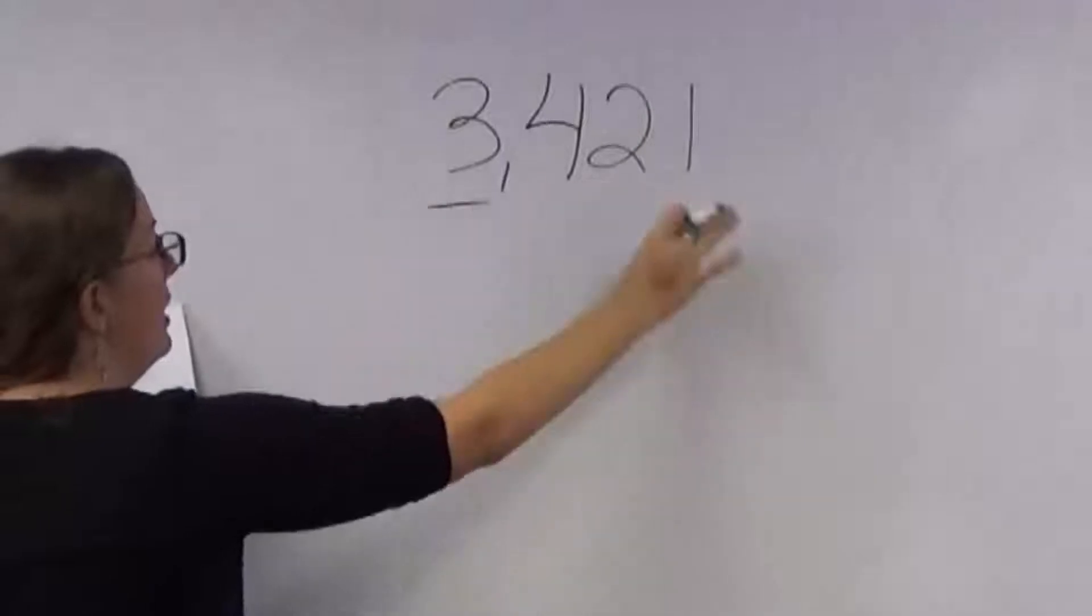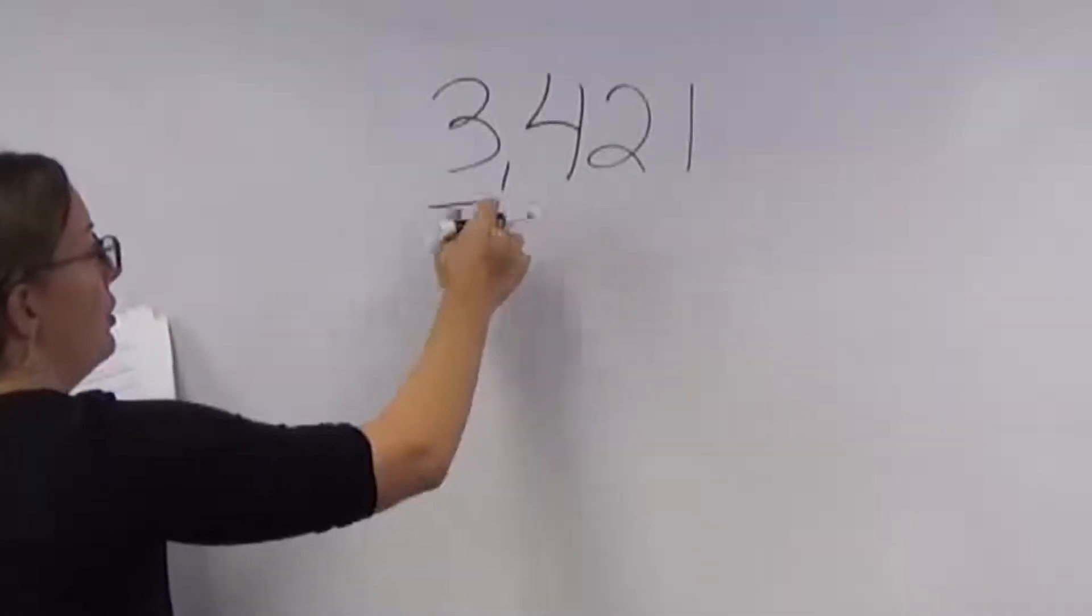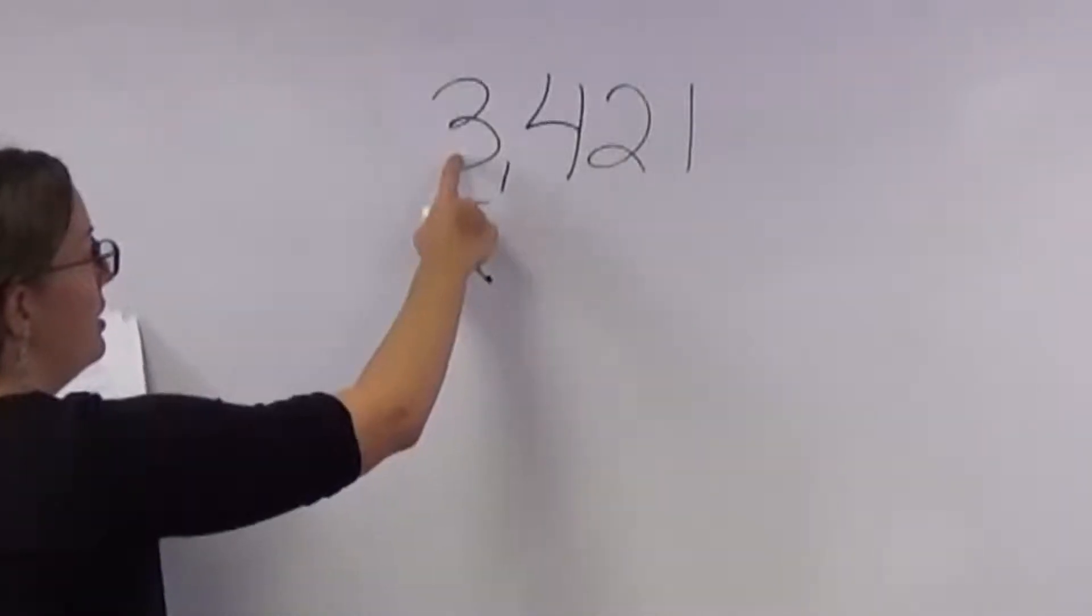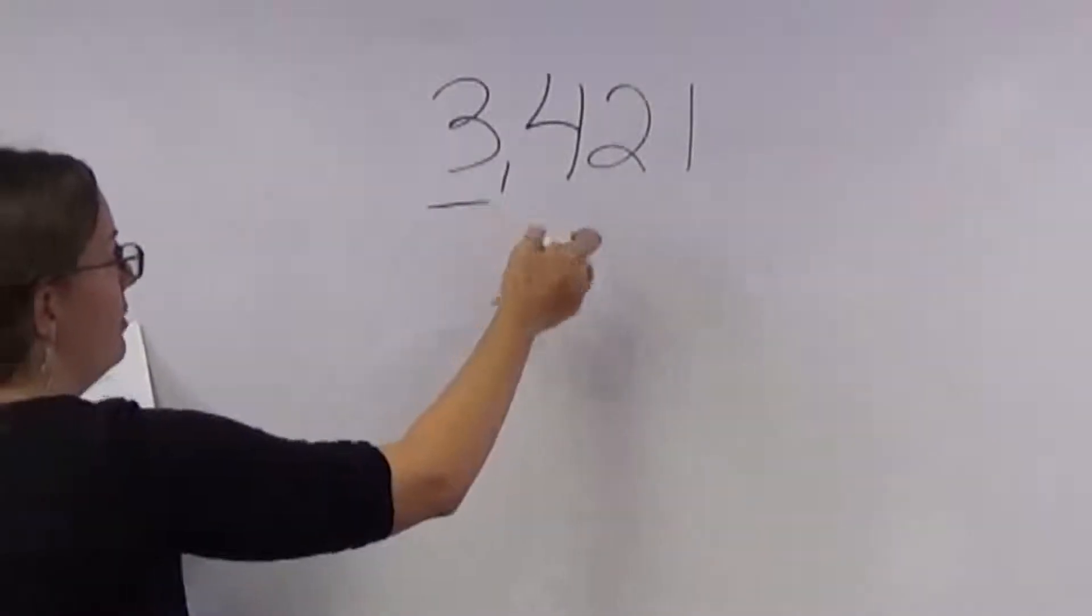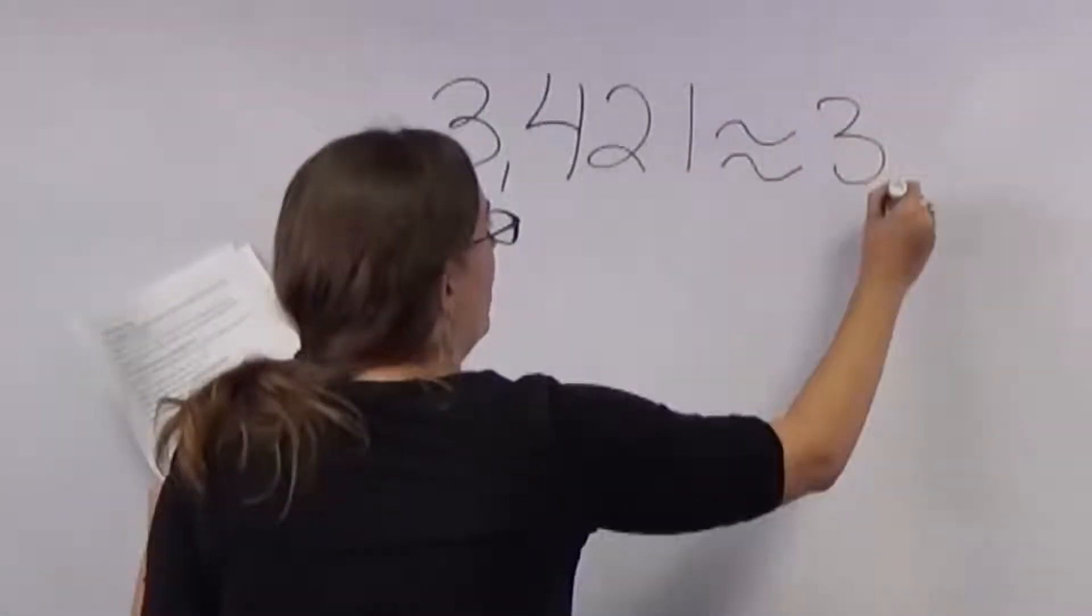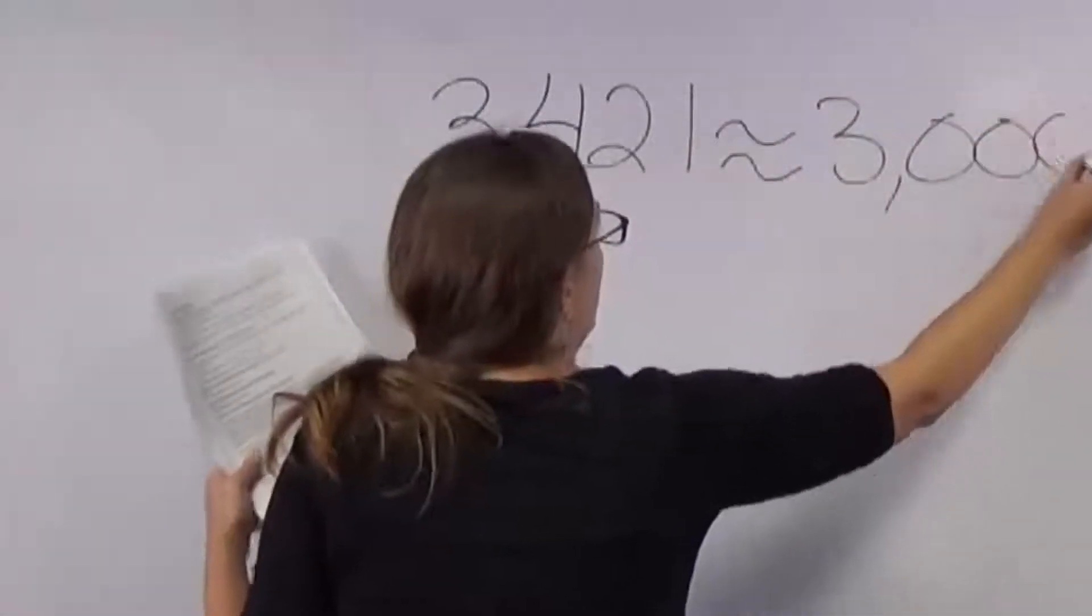Regardless, everything else turns to zeros. So in this example, this is a four and below. So that means that we would round this to the nearest thousands place. We would round it using an estimation symbol. We would round it to three thousand.